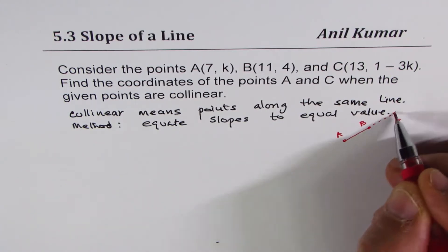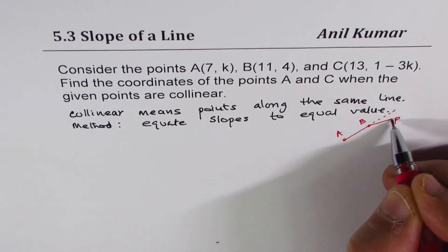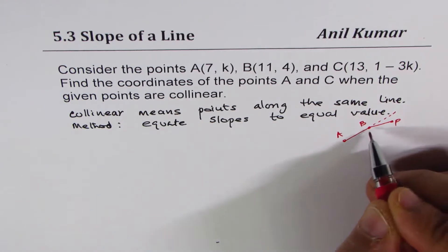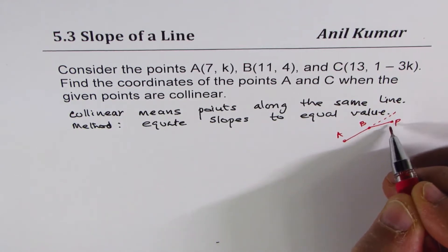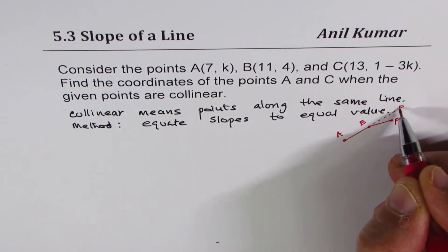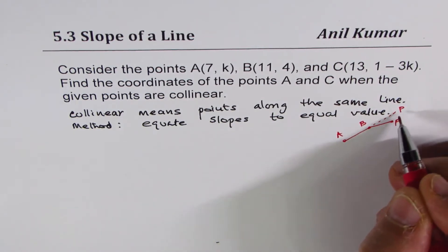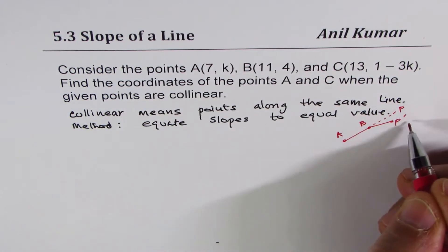then the slope will be same. But if it is not, in that case, the slope will not be same. So we'll say a point P will lie on the line only if their slope is same. Otherwise, it may not lie.